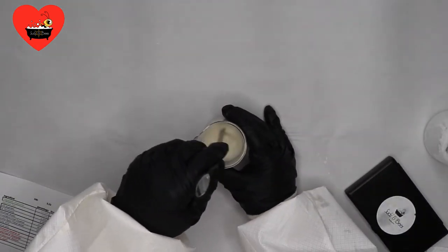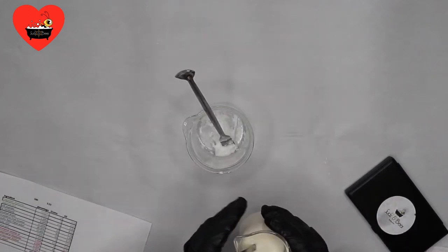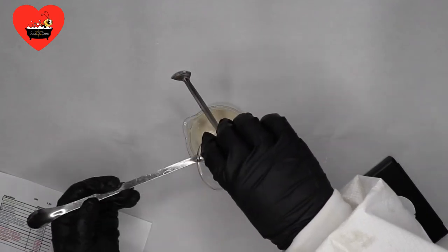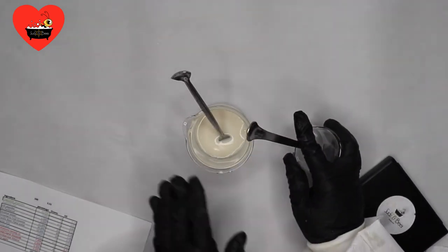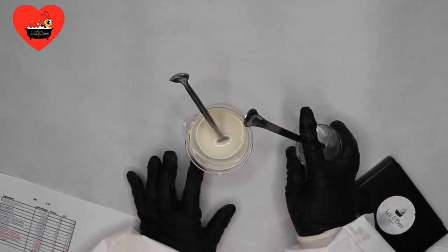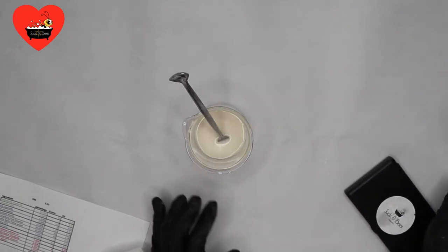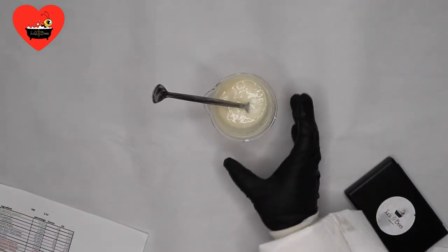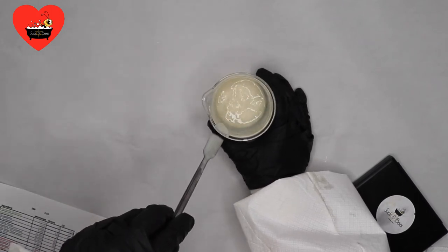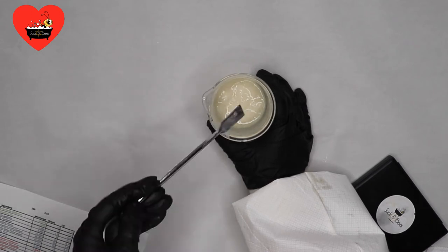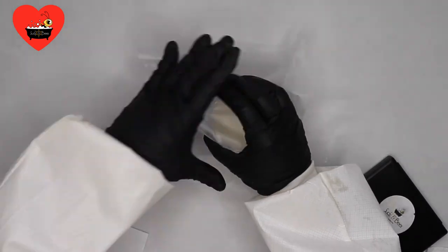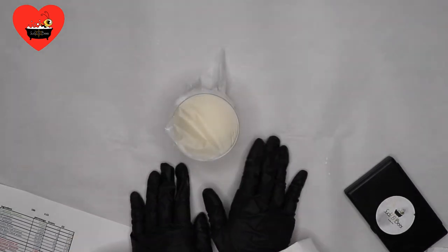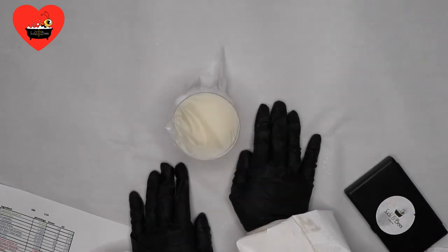Now I'm going to grab phase A and pour phase B into phase A. The reason I did it like this is I want to make sure my powders are fully dissolved before I pour it into here. I'm going to leave this to sit here for a few hours. I'll be back in a few hours. We'll make our phase D, mix it in, and then we'll be ready to package.